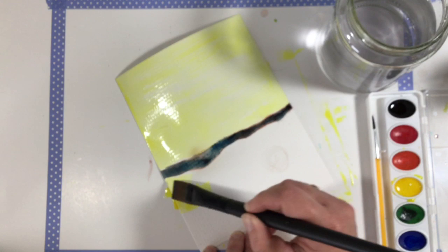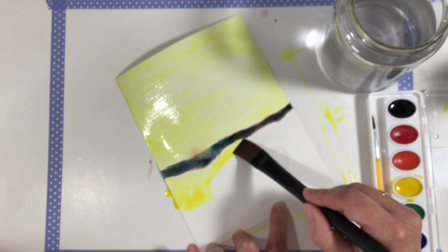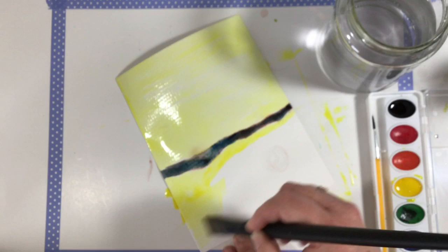Now we're going to go up here and do the sky, and again going around the mountains there, the hills, very very carefully so we don't smear that darker color into the yellow.